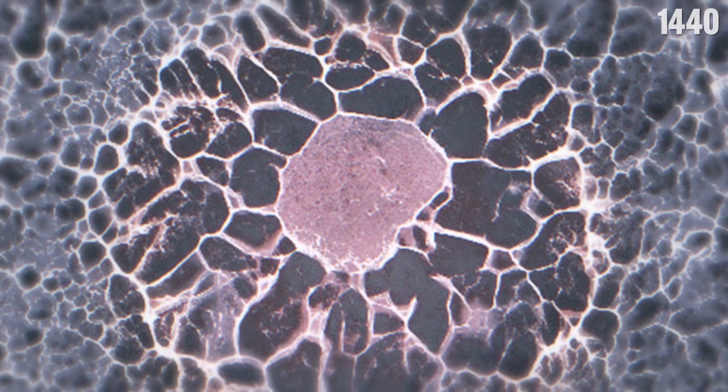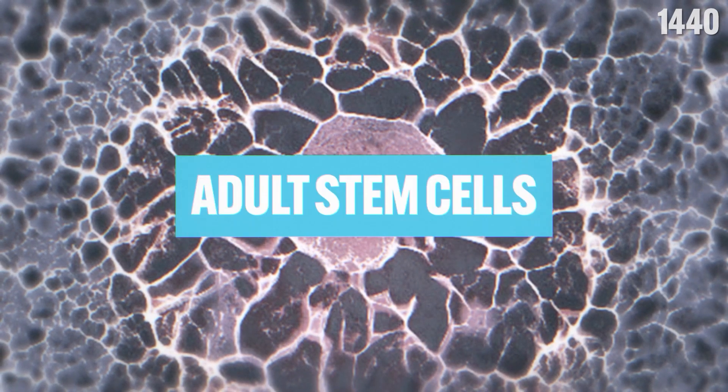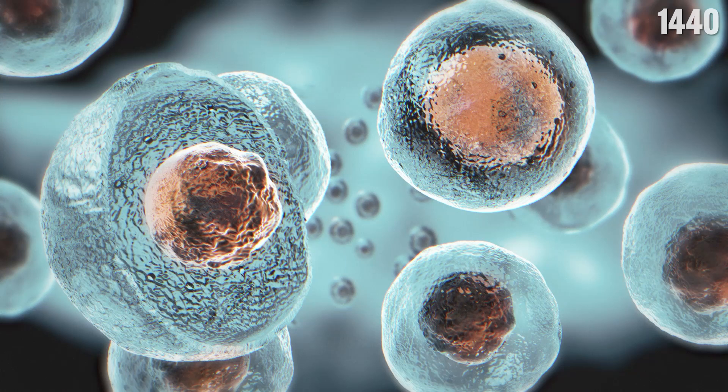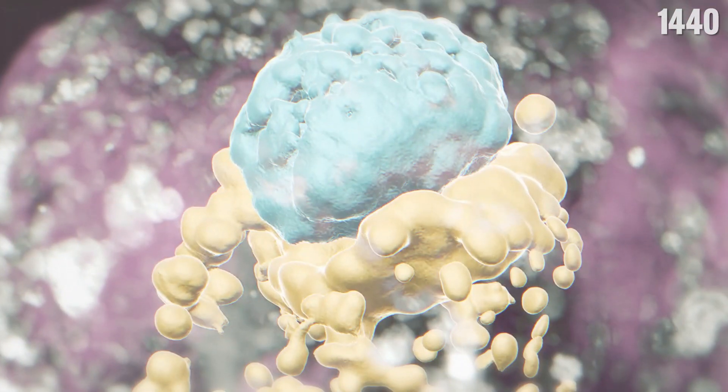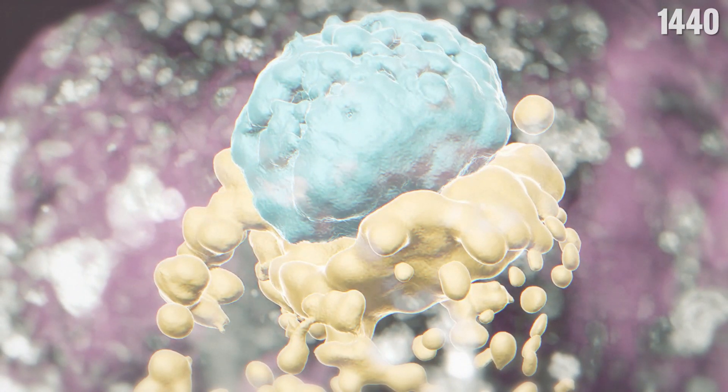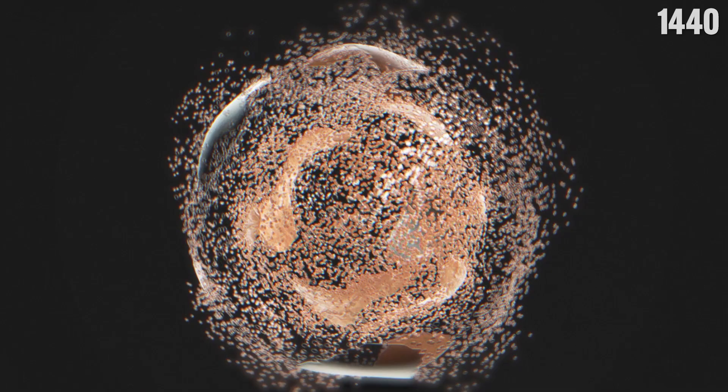After development, organisms produce adult stem cells. These specialize in creating cells relevant to their location in the body, replacing specialized cells when they wear out or are damaged.